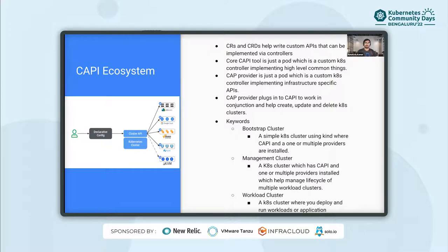Cluster API offers declarative APIs that are pluggable to different components known as providers, which actually perform the operations, for example creation of VMs, networking, etc., on the infrastructure. CAPI is just a tool that will run as a pod in your Kubernetes cluster, and providers — for example, Cluster API Provider Azure or Cluster API Provider AWS — are also tools that will run as pods in a Kubernetes cluster. These pods or tools work in conjunction to help provision Kubernetes clusters and manage their life cycles.